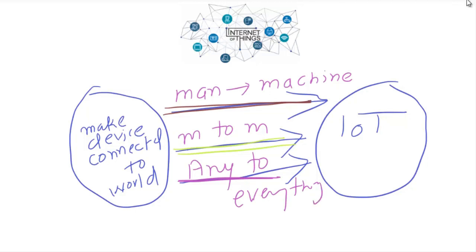IoT is not actually limited to man-to-machine or machine-to-machine communication. In fact, it is often called IoE — Internet of Everything. Many organizations pronounce IoT as IoE because we can connect anything in the entire world to an IoT network and control it. The only question is what architecture and hierarchy you are going to use.